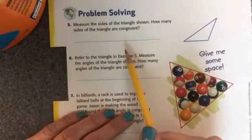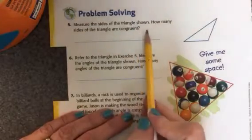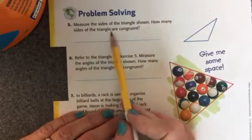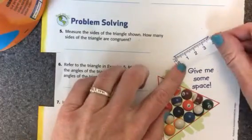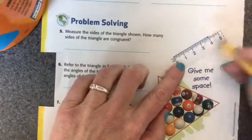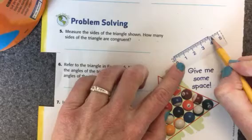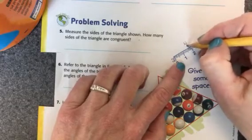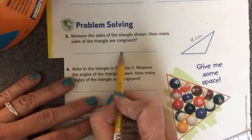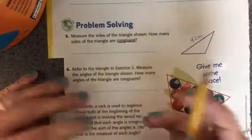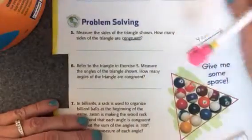Let's look down at number five. Measure the sides of the triangle shown, how many sides of the triangle are congruent. We did this on the front, basically. We measure the side of the triangle. This one is four centimeters. You'll measure these other two, and then write down how many sides are congruent. And remember, congruent means that they're the same length.